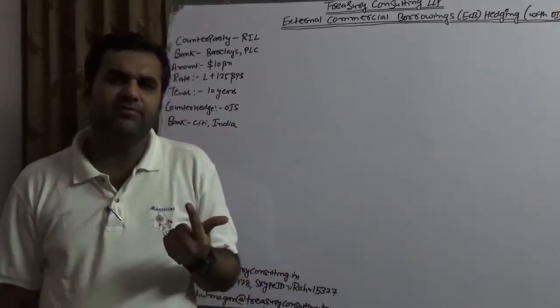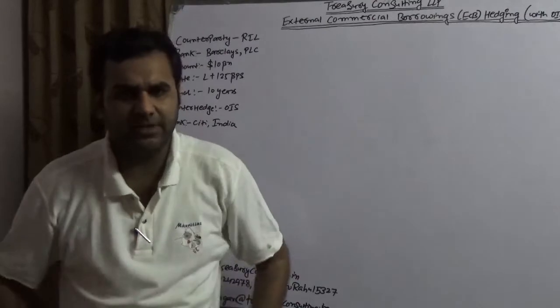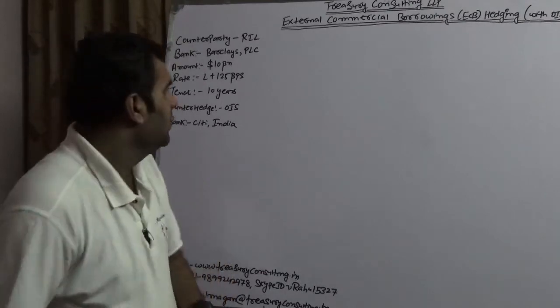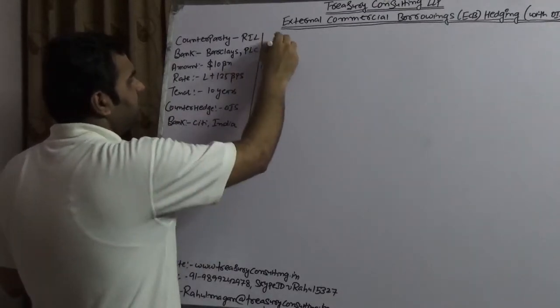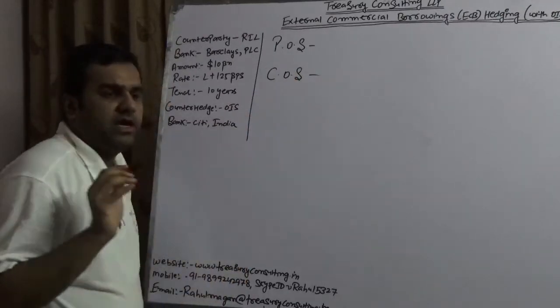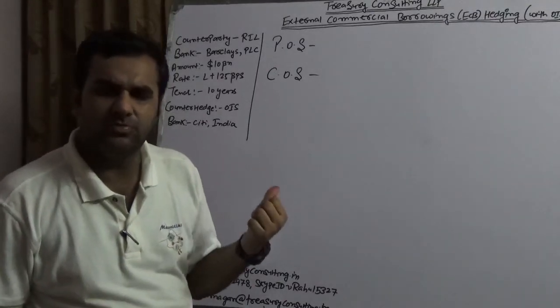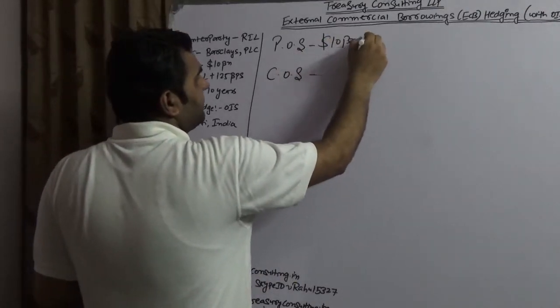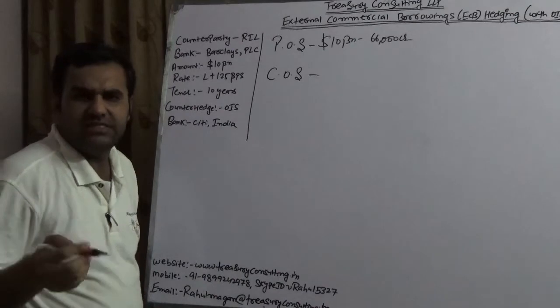We will go with the earlier example. We are going to be very descriptive about a small part of the ECB. ECB is divided into two parts: one part is POS, which is Principle Only Swap, and another part is COS, which is Coupon Only Swap. In the principle only swap, you are going to decide a rate. In the earlier video, we assumed the rate of 66, so the total funding is ten billion dollars, and via 66, this is 66,000 crores.